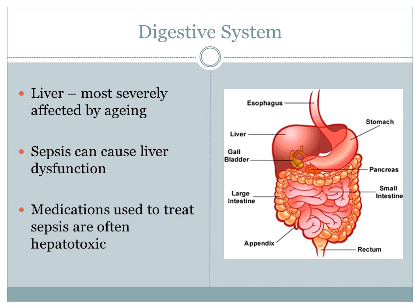As we move forward to the digestive system, the liver is the most severely affected by the aging process. The liver is responsible for metabolizing medications, and advancing age can restrict the detoxification of medication by as much as 30% from adulthood. This is extremely important to realize in the elderly septic patient. Without adequate liver perfusion, medications cannot be metabolized. Sepsis not only causes liver dysfunction, but medications used to treat sepsis can often be hepatotoxic.